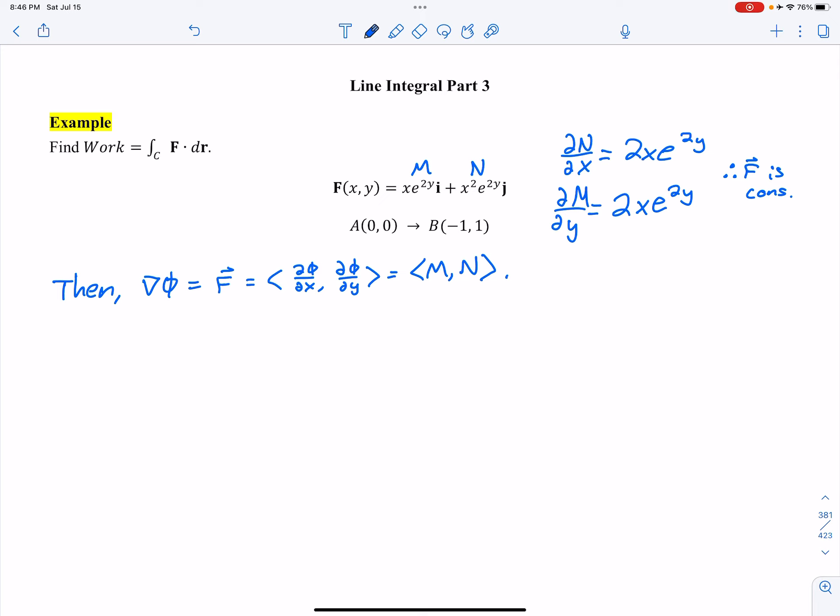That means we can work backwards. So phi of XY is equal to the integral of phi partial with respect to X, DX. Well, that's just M. So I'm going to replace it with M there. We got XE to the 2Y, DX.